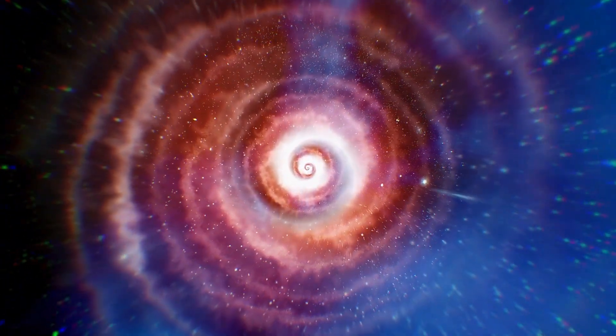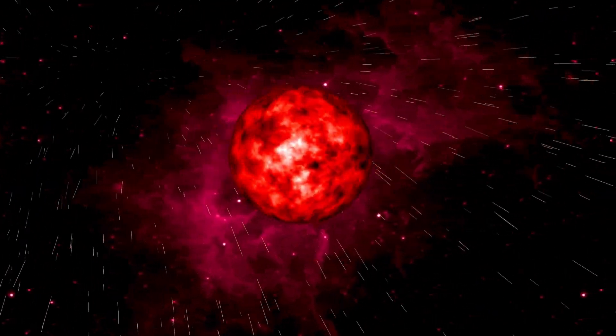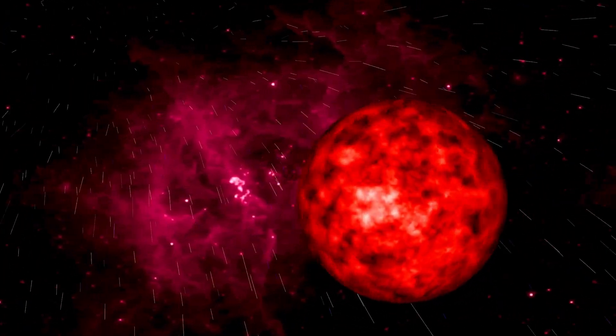Then comes the climax, when iron starts forming at the core. Unlike lighter elements, iron doesn't release energy when fused, so the energy produced isn't enough to resist the star's own crushing gravity. The star balloons in size and creates an implosion, followed by a massive rebound effect, resulting in the explosive force of a supernova.